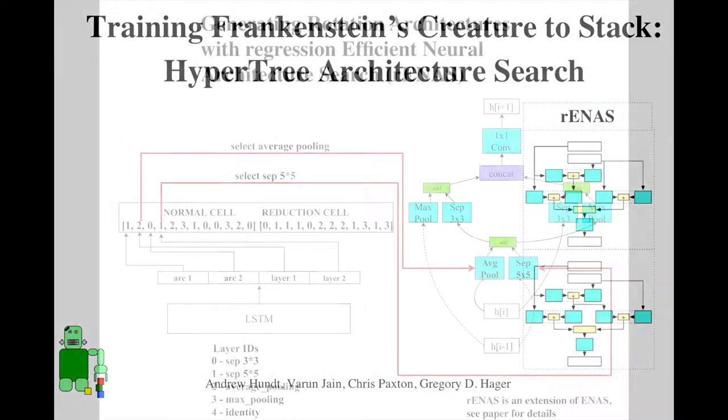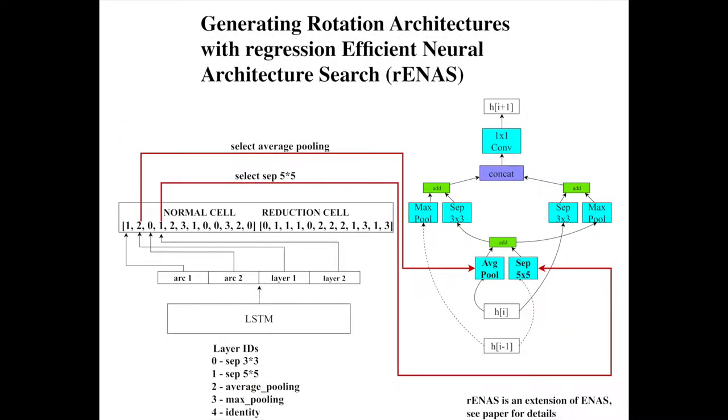Next up, we discuss RENAS, or Regression Efficient Neural Architecture Search. In its predecessor, ENAS, an LSTM predicts architectures in a metamodel, and metamodel weights are not discarded during the search, dramatically increasing search efficiency.